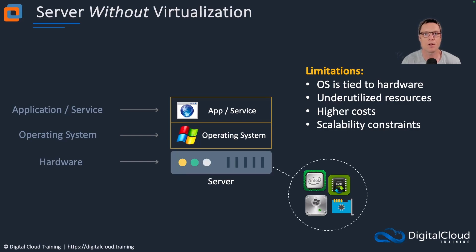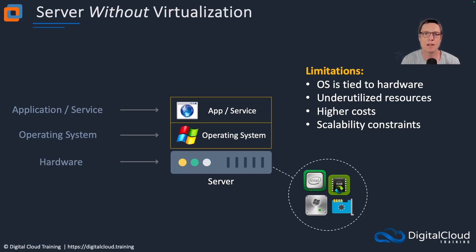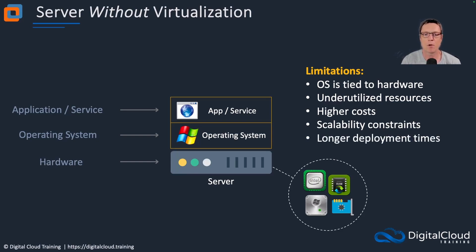And there are scalability constraints. What if we suddenly need a lot more compute power? We either have to add compute power to the underlying physical server — maybe literally open it up and add memory cards — or find a way to move the operating system and application somewhere else, unless we can scale horizontally. There are also longer deployment times because we need that hardware layer.